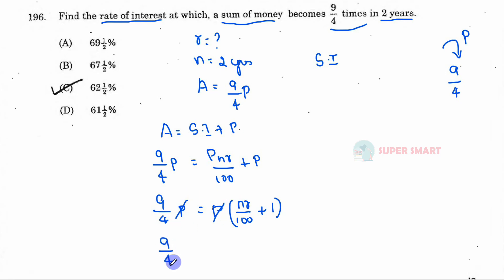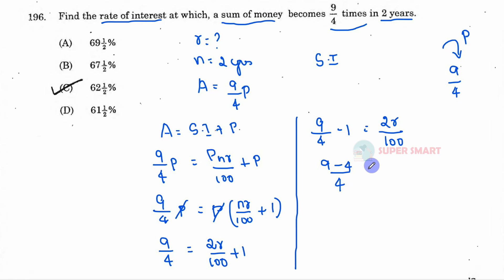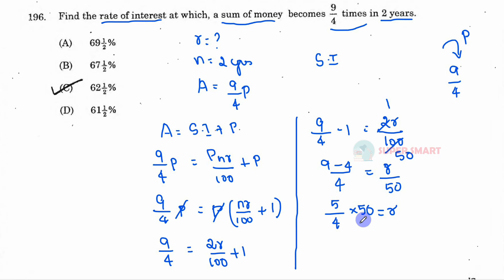So 9/4 equals the n value from the question: 2R divided by 100, plus 1. Rearranging: 9/4 minus 1 equals 2R divided by 100. That gives (9 minus 4) divided by 4 equals R by 50. So 5/4 equals R/50. Cross-multiplying, the numerator and denominator give us R.